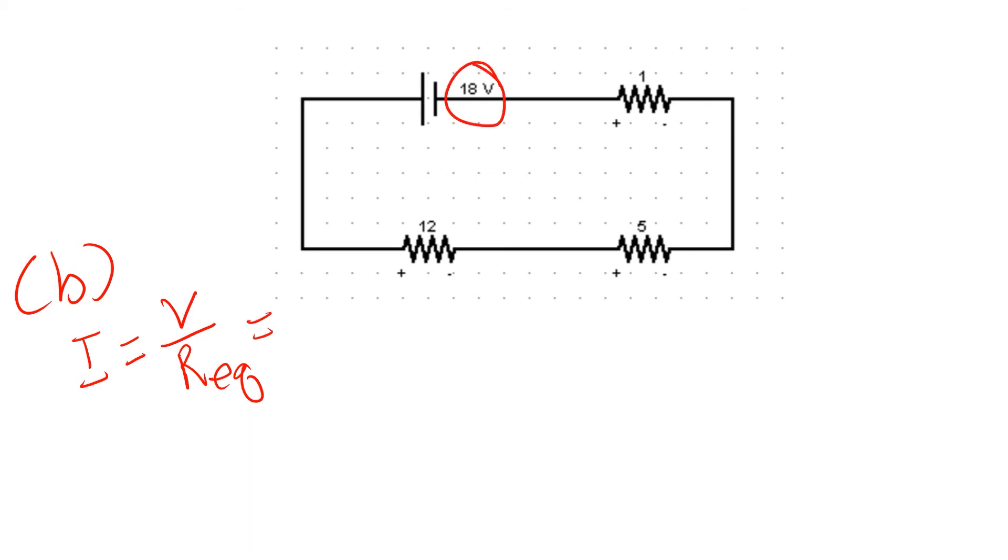So the value of your voltage source is 18 volts over the value of the equivalent resistance for this circuit diagram, which is 18 ohms. So the value of I for this circuit is equal to 1 ampere. It's simple as well.